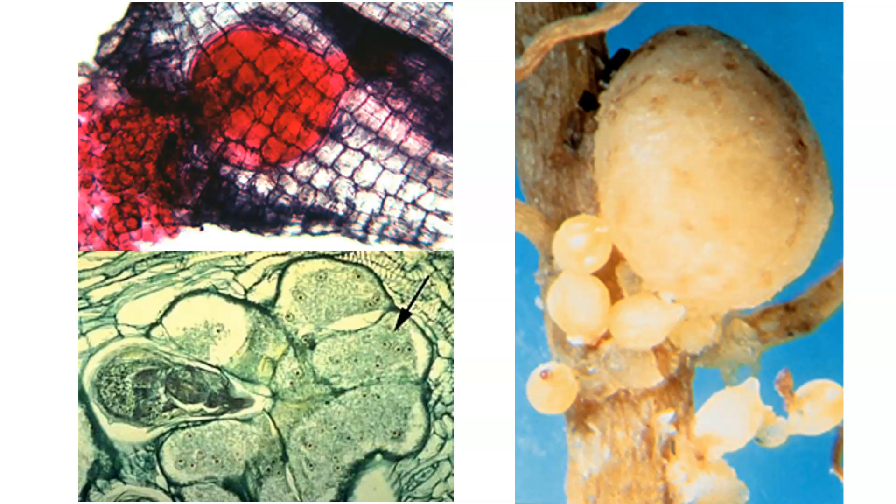These root masses are caused by root knot nematodes. Plant roots are supposed to be thin and fibrous. These roots have become thick and unevenly thickened. The root looks like it's been tied in knots. This is a result of the infection of the root by the nematode. You can see the mass that has been created and how these roots are not going to be absorptive or able to transport nutrients.